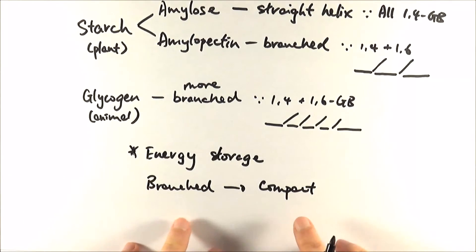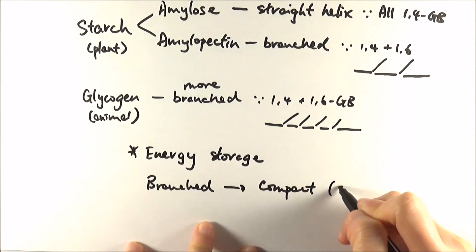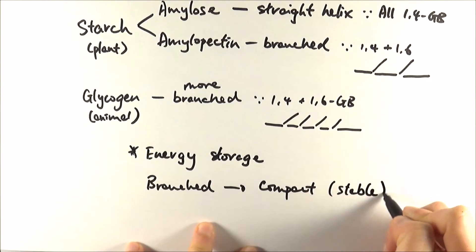If it's branched, it means that it's compact and that means that it is stable. So it doesn't react very easily with water or any other sort of chemicals. Hence why it's good as a storage compound in these organisms.